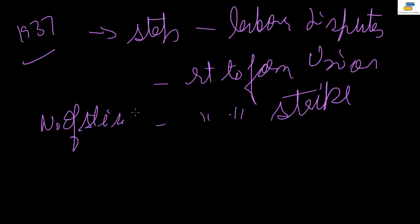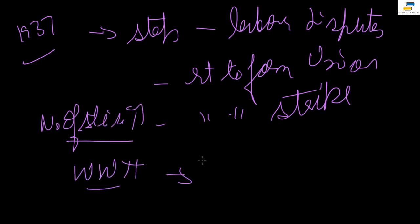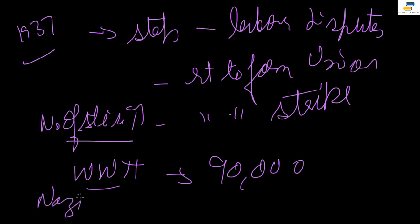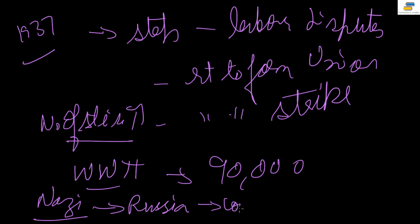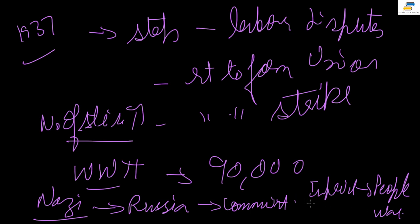The number of trade unions and strikes went up after 1937. When World War II started, the working class of Bombay was the first to go on strike — 90,000 people in Bombay. When the Nazis broke their agreement with Russia and attacked it, all communists in India said the character of the war had changed from imperialist to a people's war, and they started supporting the Allied powers against German fascism. Because of this policy, many trade unions and communists disassociated themselves from the Quit India Movement of 1942 — this can come as a question in your exam.